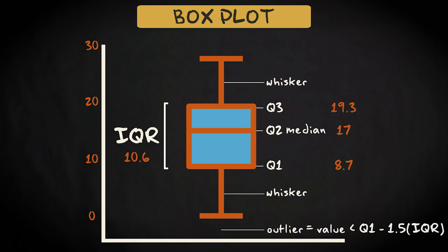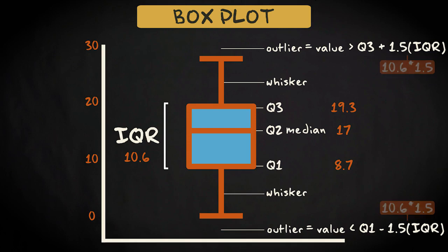We know that values below 1.5 times the IQR below Q1 and above 1.5 times the IQR above Q3 are outliers. Our IQR is 10.6, so 1.5 times 10.6 equals 15.9.